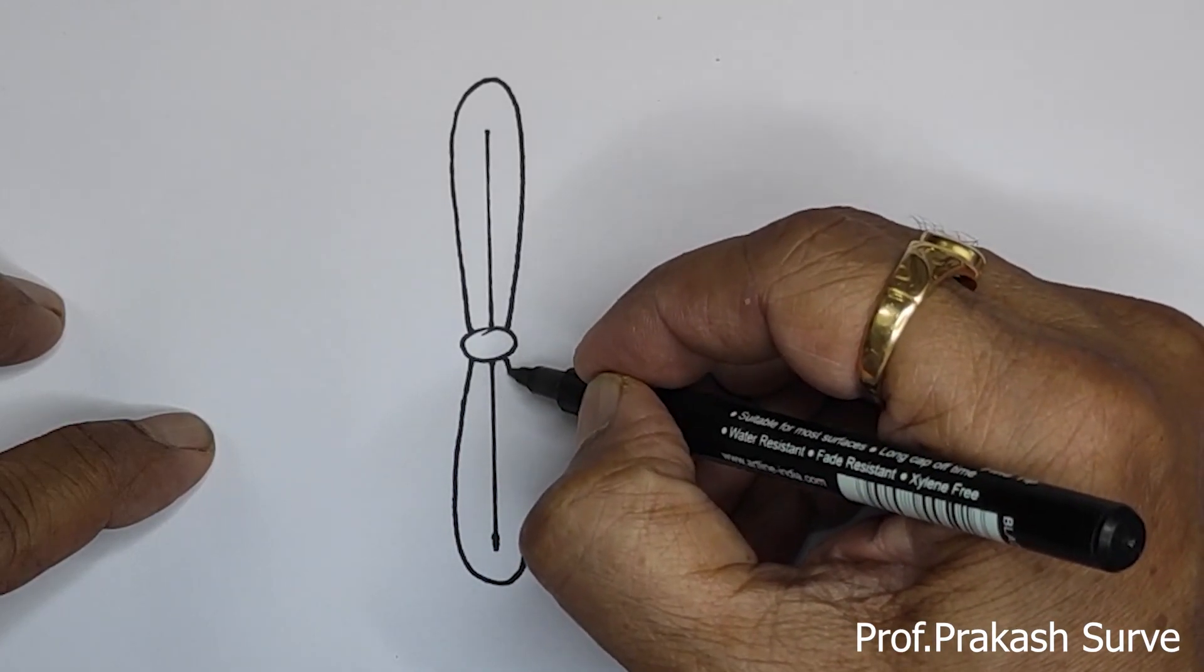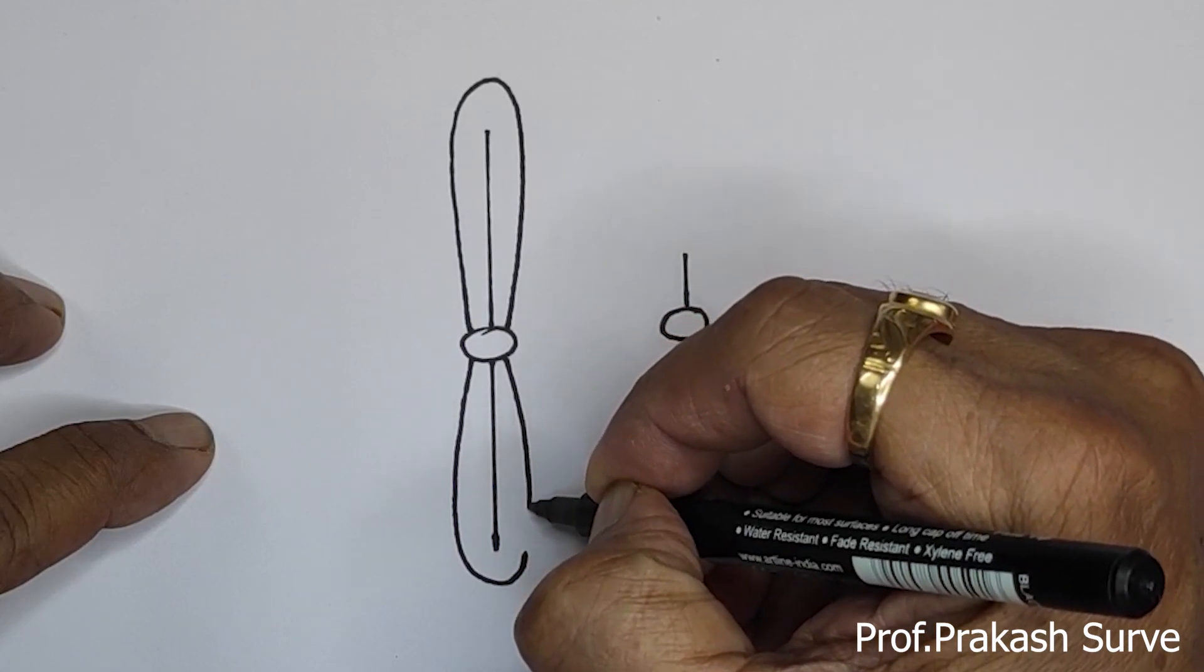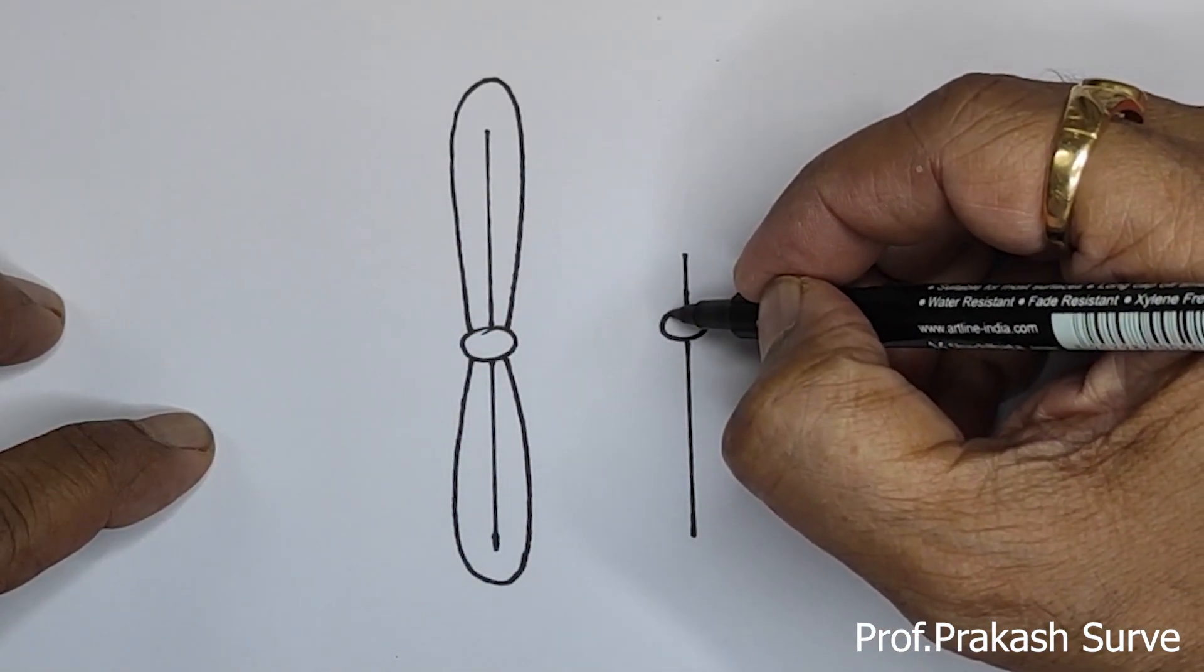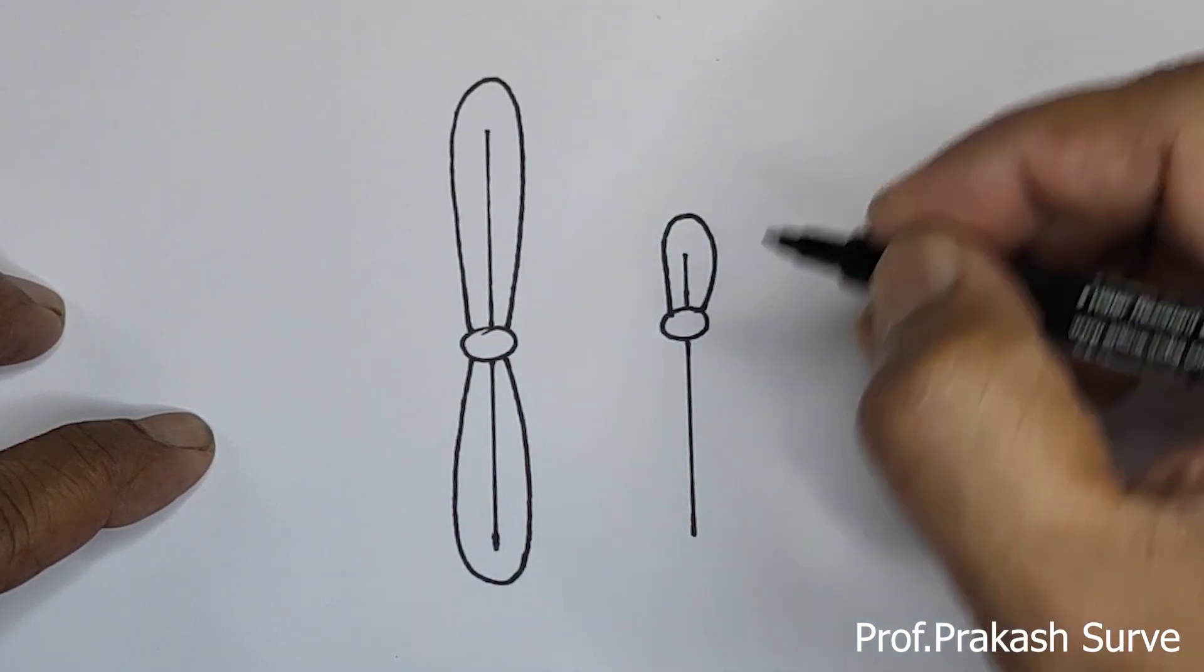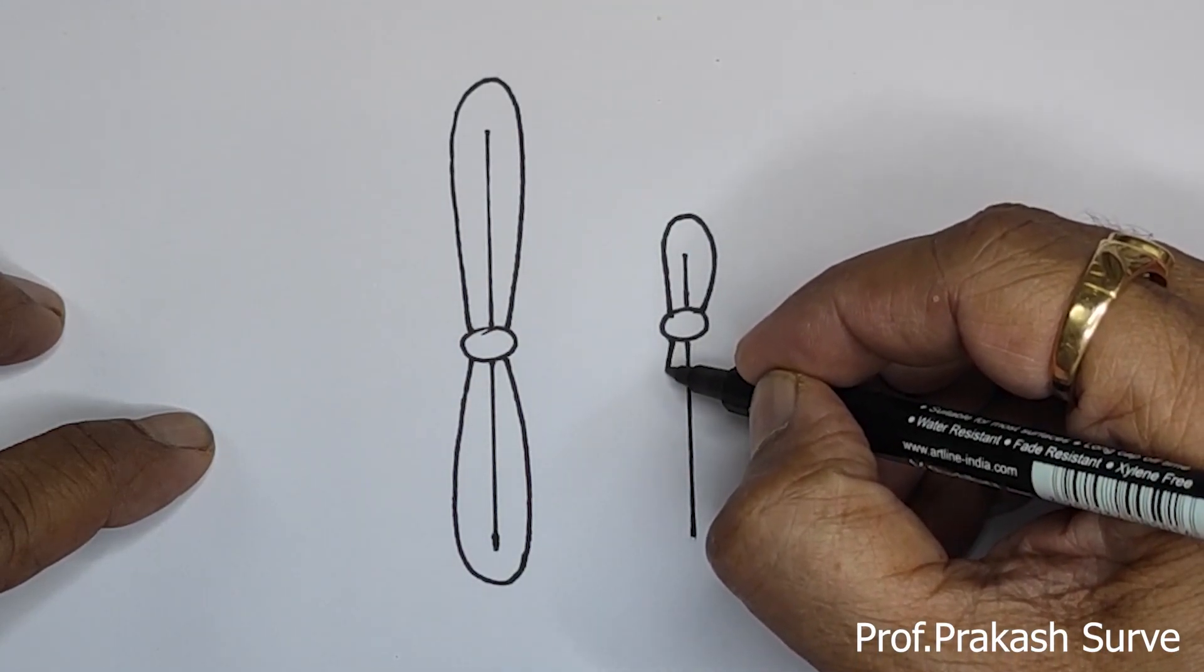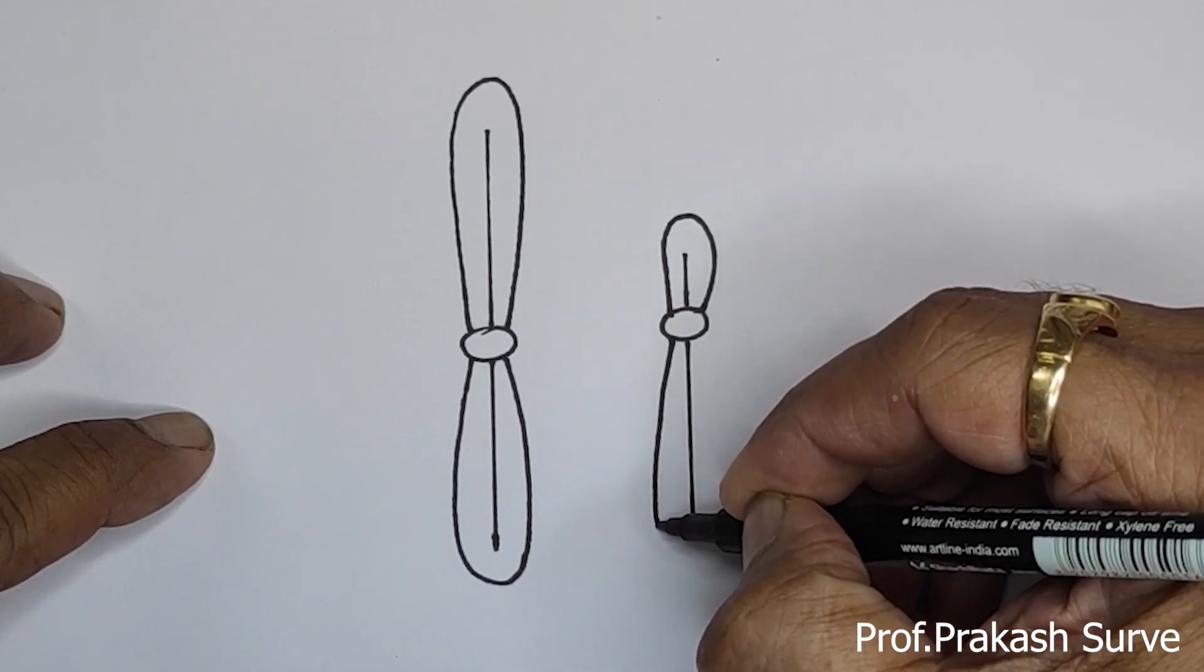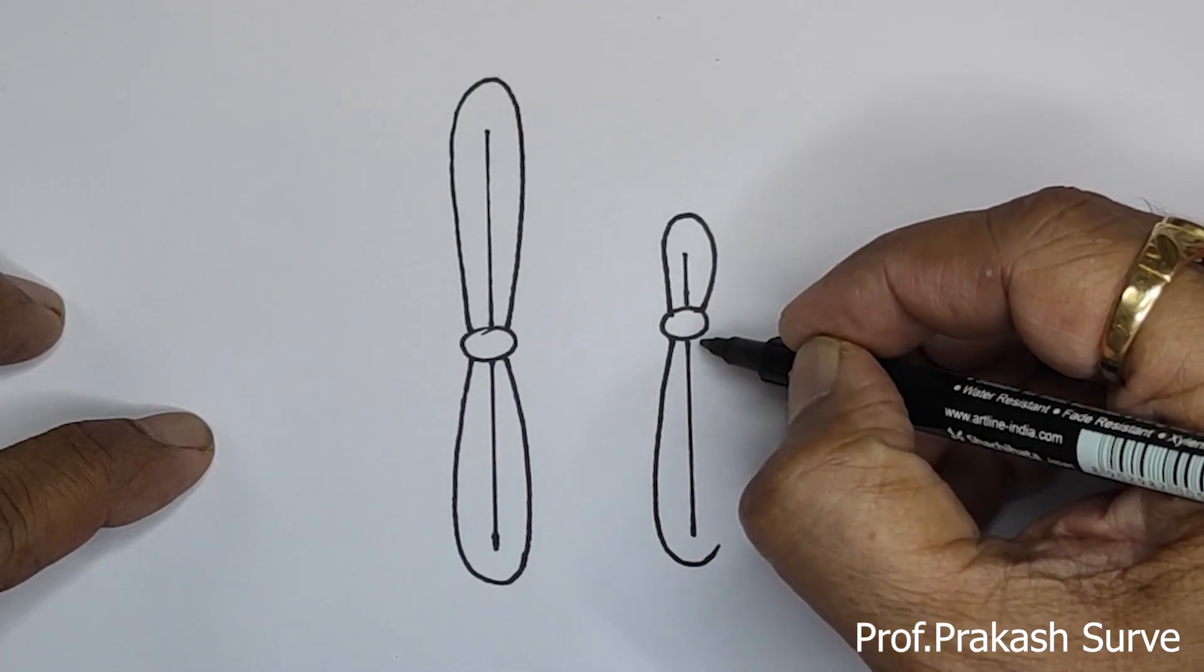Now we will do about the Y chromosome. This is the non-homologous region of Y chromosome. On the lower side, homologous region of Y chromosome. So this is what we have completed X and Y chromosome easily with easy steps.